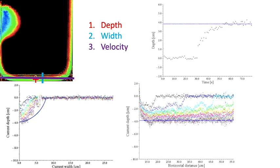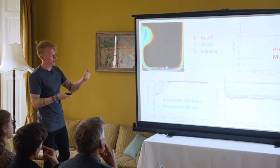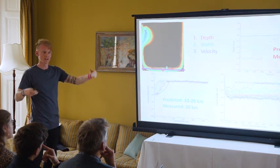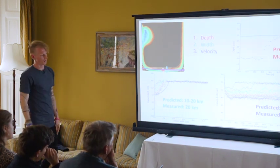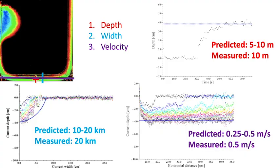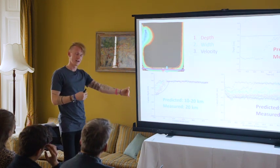If you compare the formulas to real data based on the numbers for the river Rhine — the same satellite image I showed at the beginning — the theory predicts a depth between five to ten meters, and you can measure the river current coming out of the Rhine at about ten meters. The width is predicted between ten and twenty kilometers from the coast, and you can measure that it's about twenty kilometers as well. The speed is predicted at about 0.25 to 0.5 meters per second, and it's measured at about 0.5. Those very simple formulae are actually giving us useful information.